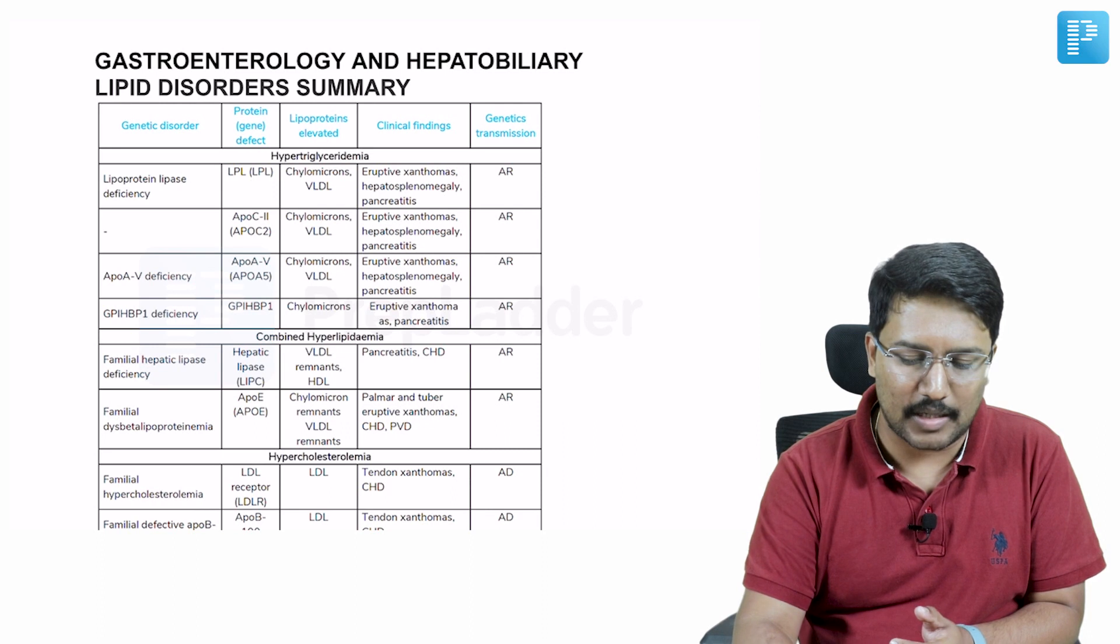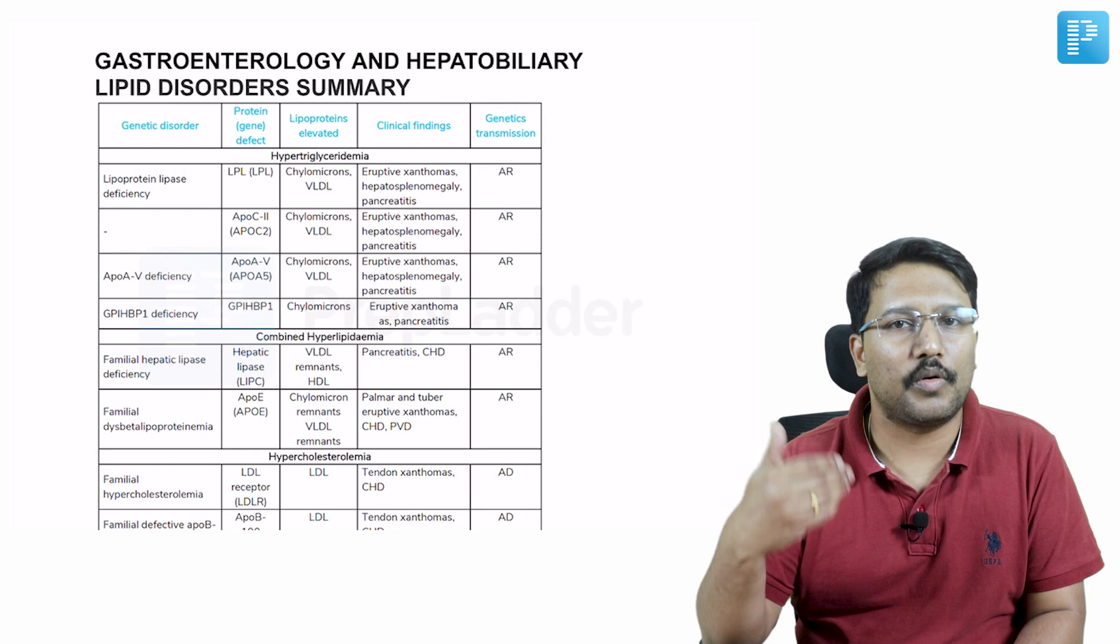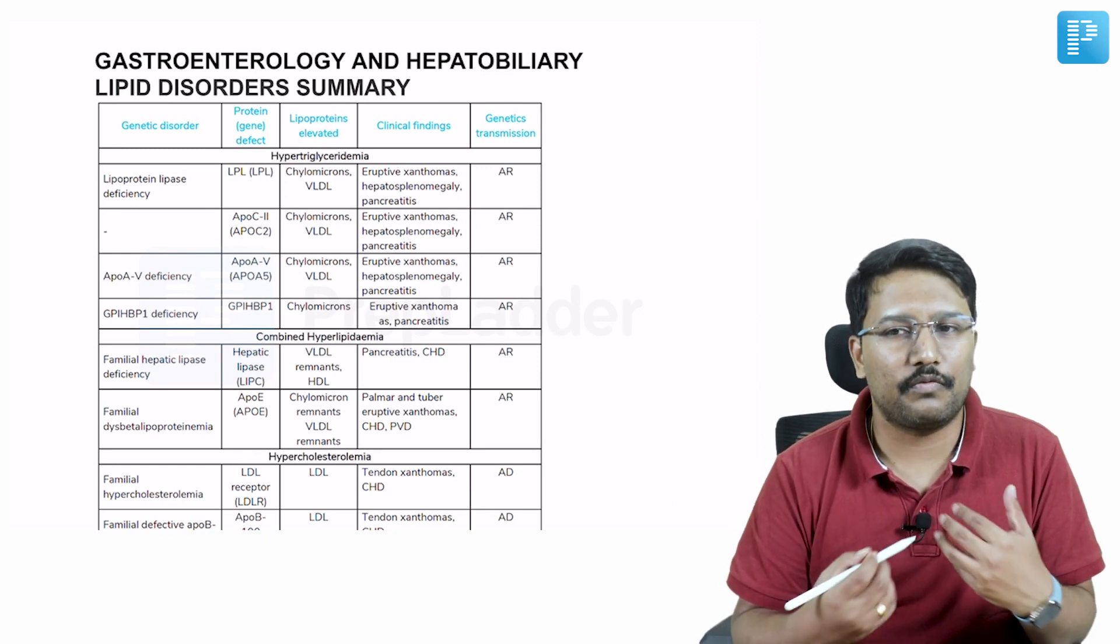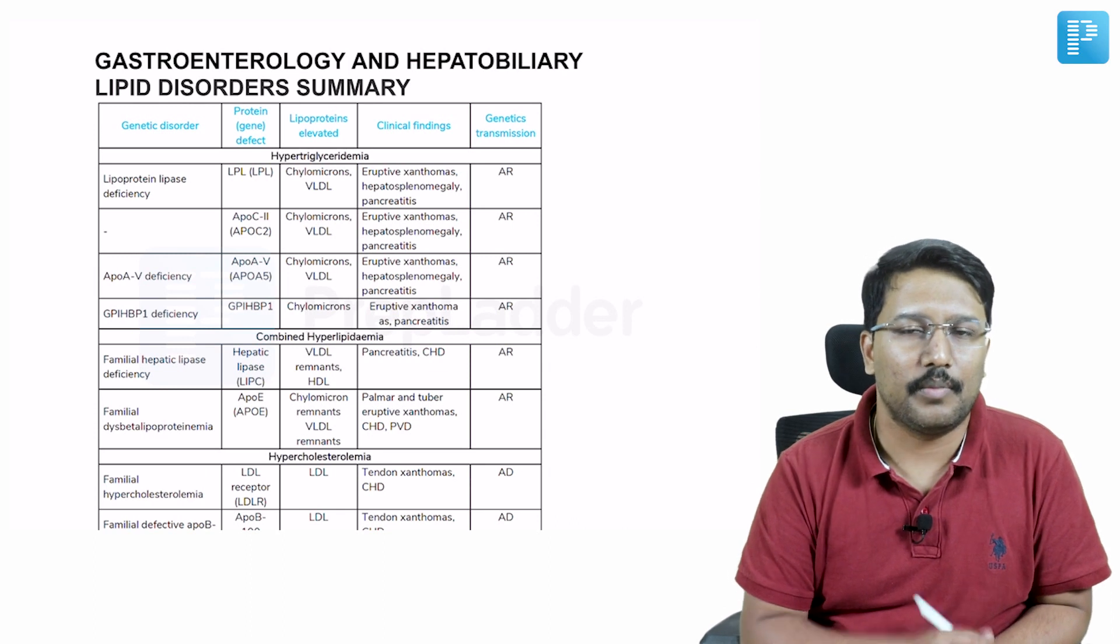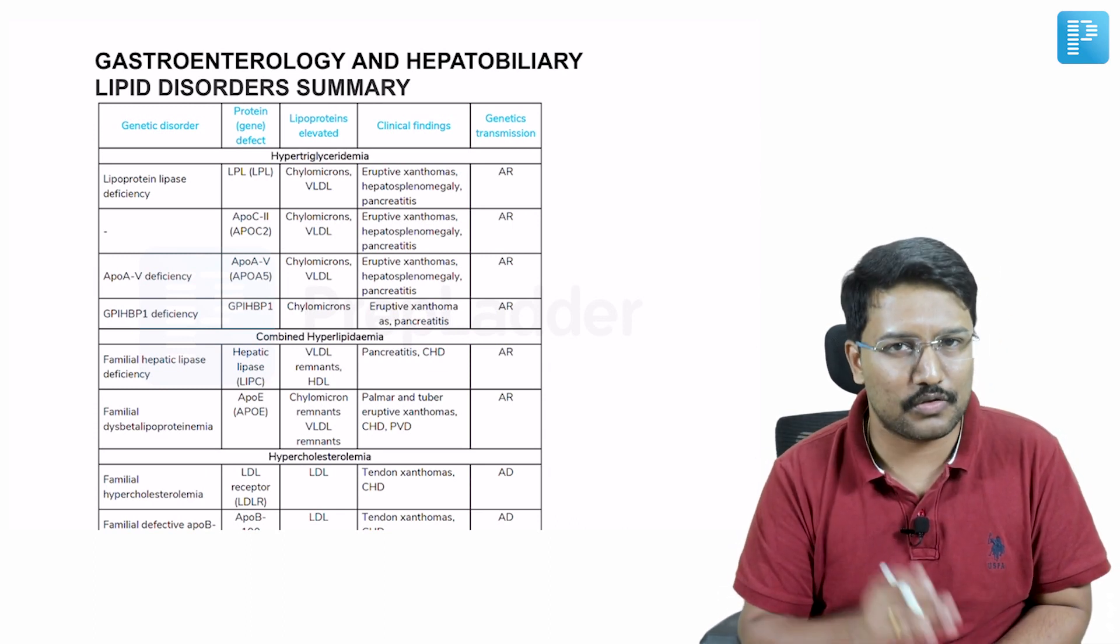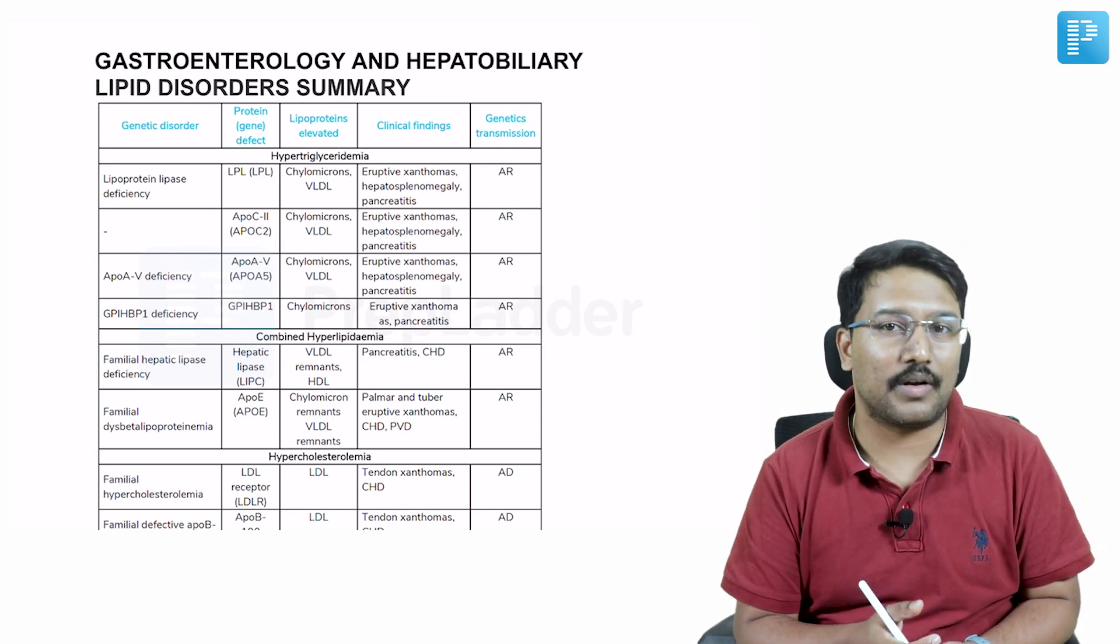For example, if you talk about the lipid disorders and you open up Harrison, you will see the data presented in the form of textual description. For first time understanding, it's very essential that we read through all that information. But when you revisit those chapters, it becomes really horrible to go through all those lines and try to recollect whatever we have already learned.